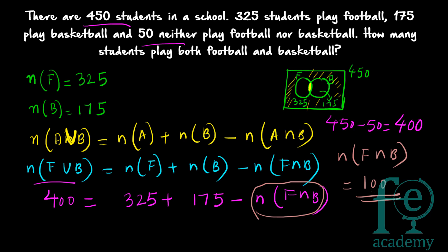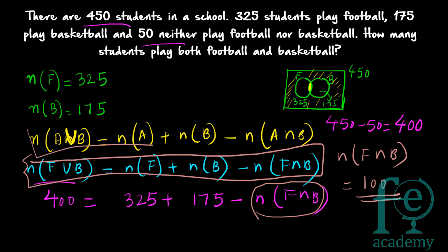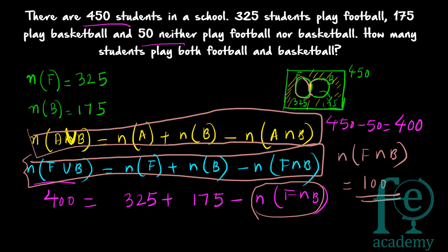325 + 175 = 500, and 500 − 400 = 100. So 100 students are playing both football and basketball. This formula works because when you add both circles, the shared overlapping portion is counted twice, so you subtract it once. That is the geometric meaning behind the formula.